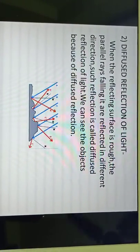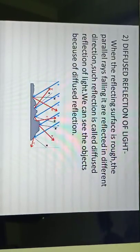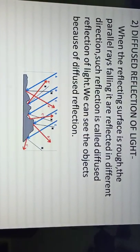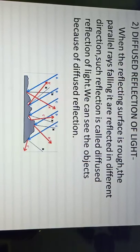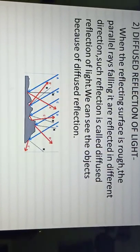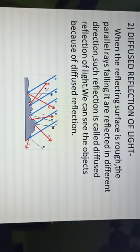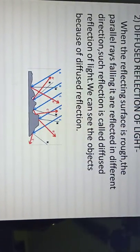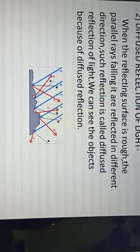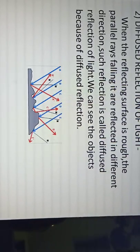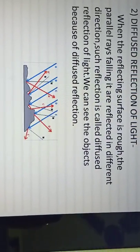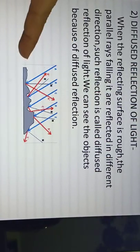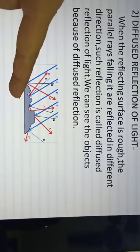The second type is diffused reflection of light. This actually happens with a rough surface. When the reflecting surface is rough — and generally all types of surfaces are rough — the parallel rays falling on it are reflected in different directions. Such type of reflection is called diffused reflection. Generally, we see objects because of diffused reflection of light. You can see in the diagram how reflected rays vary in direction because of the surface.